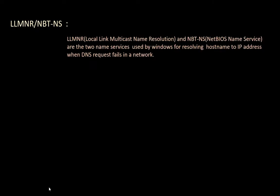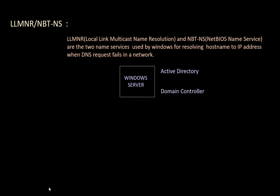Local Link Multicast Name Resolution (LLMNR) and NetBIOS Name Services are the two name services used by Windows for resolving hostnames to IP addresses when a DNS request fails in a network. In other words, it is used to identify your hostname when DNS doesn't work. Let us understand it with the following diagram. Here we have a Windows Server which is running Active Directory and acting as a domain controller, managing a domain like universe.com.